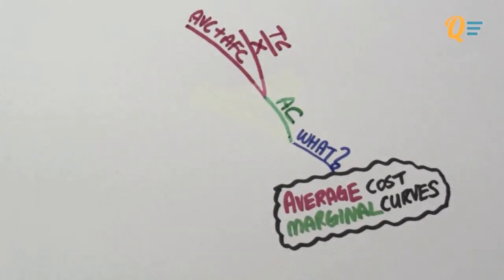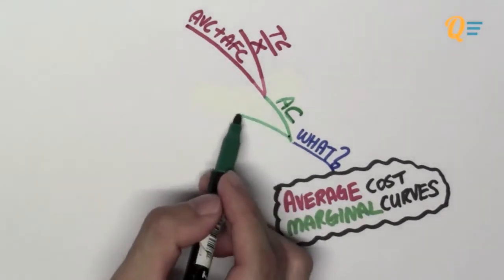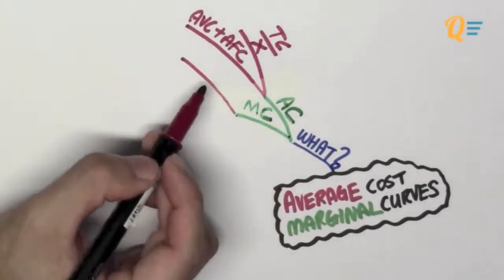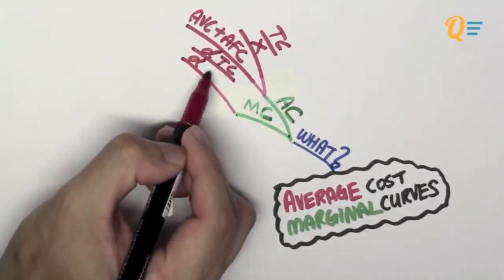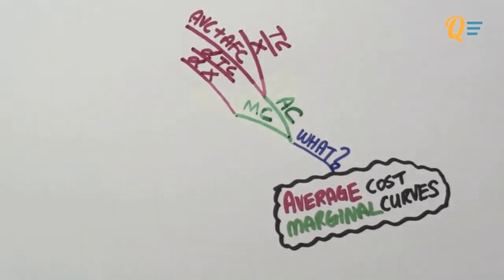It is also equal to the average variable cost plus the average fixed cost. Now the marginal cost tends to be a little bit more complicating, but it's actually pretty easy. It's the change in the total cost divided by the change in the quantity of x produced.